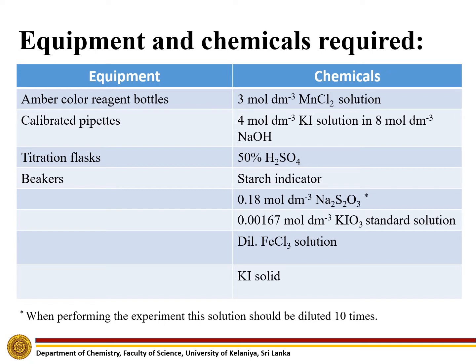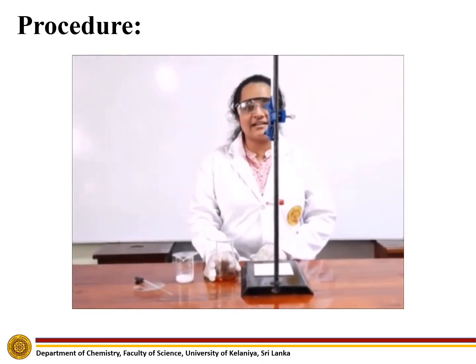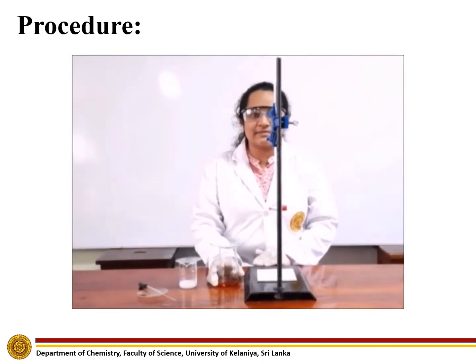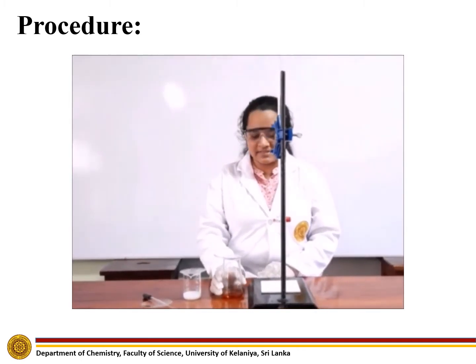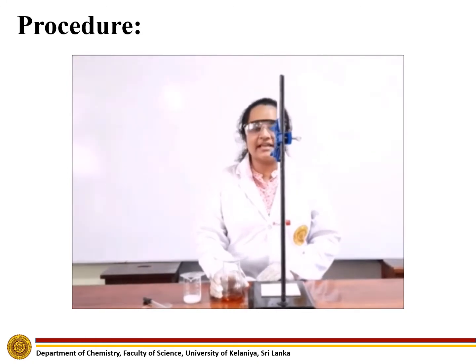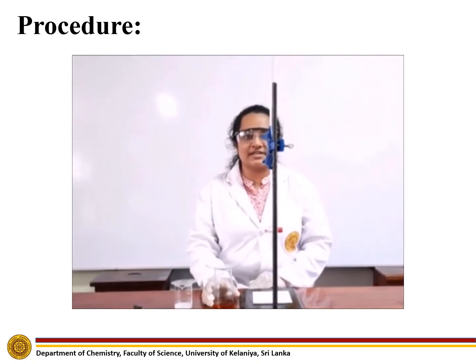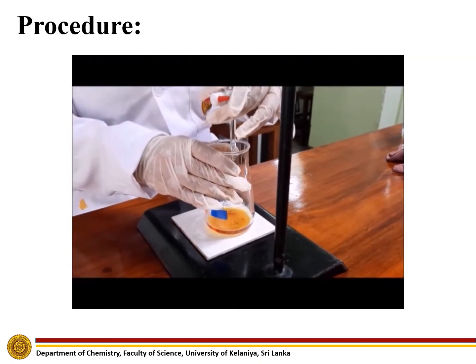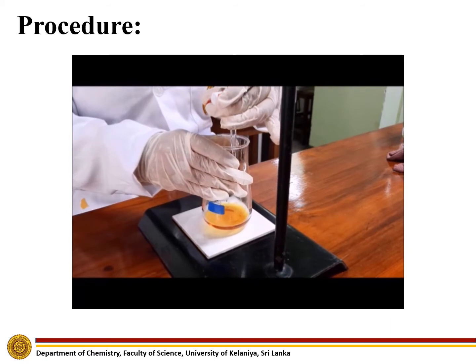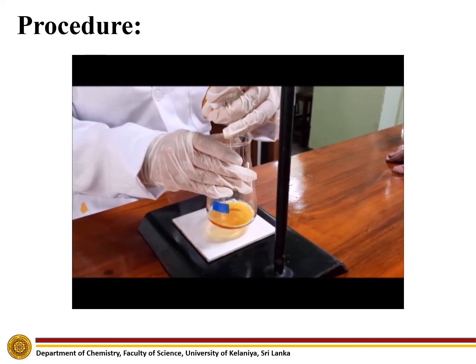Now, let us see how this experiment is performed. First, we will standardize the sodium thiosulphate solution. For this, we will add 10 ml of potassium iodide, 1 ml of sulphuric acid, and 1 ml of potassium iodate to a titration flask, and keep the solution in the dark for 5 to 10 minutes. After that, we will titrate the solution with sodium thiosulphate until a pale yellow colour is obtained.